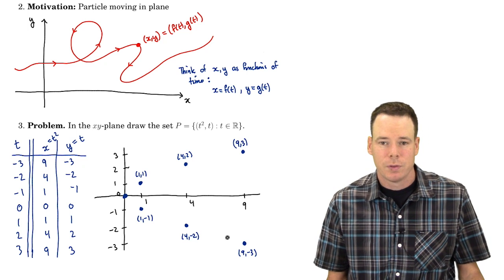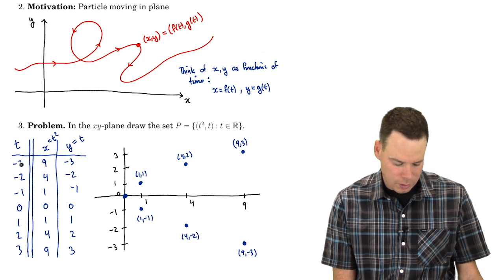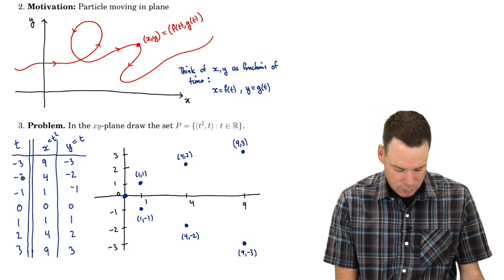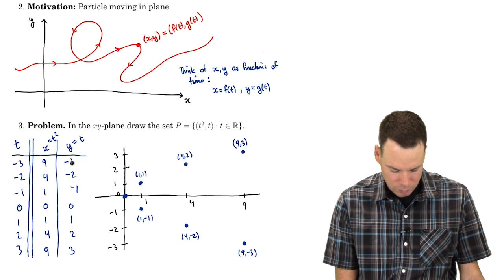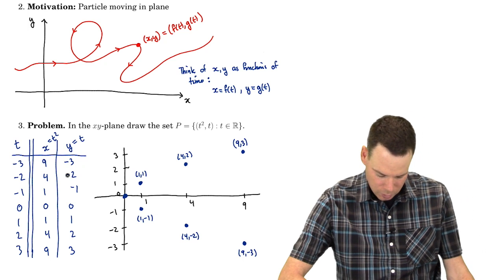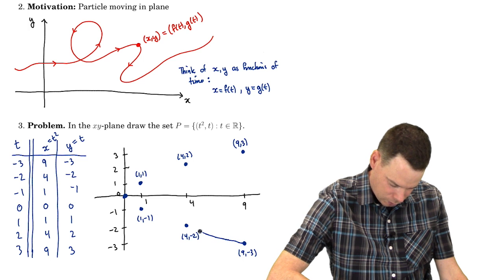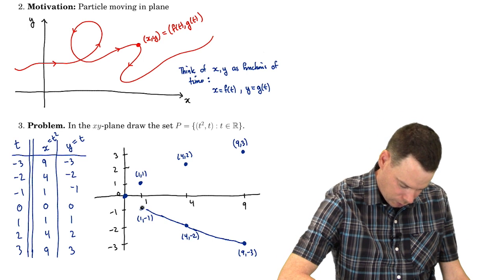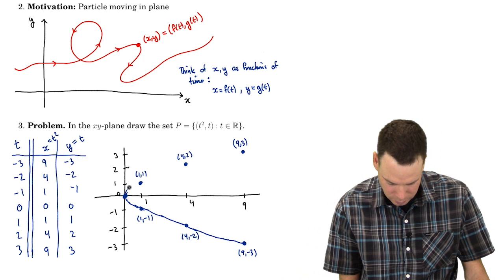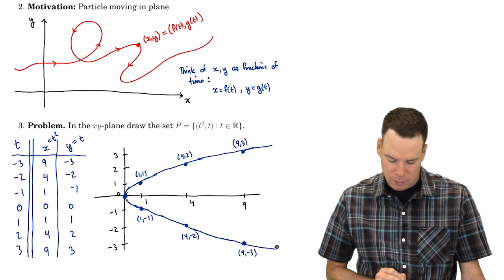Now I just imagine what happens for the t values that are close to these points. As t moves from negative 3 to negative 2, my x coordinate goes from 9 down to 4, whereas my y coordinate goes from negative 3 up to negative 2. So the curve moves from one point to the other in that direction, and it continues connecting all these points up.